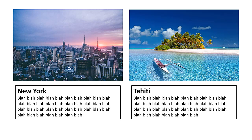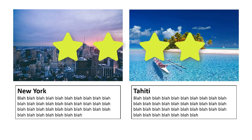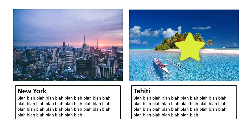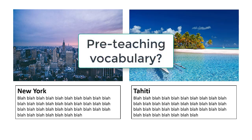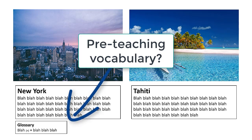Another tip is that the texts need to be interesting — that's always a good rule with reading texts — and they probably shouldn't be too difficult for the level of the learners. If there's vocabulary you'd normally pre-teach, put a glossary at the bottom in English or in the learner's first language for a monolingual class, because it feels odd to pre-teach vocabulary from two texts when learners only have one.